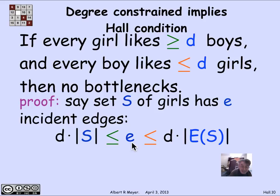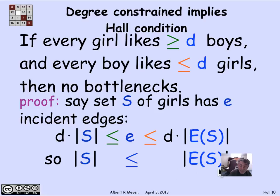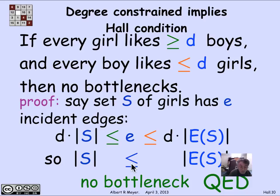So D × |S| ≤ E ≤ D × |E(S)|. Cancel the D's, and we get |S| ≤ |E(S)|. That's Hall's condition — the violation of that would be a bottleneck. This says there are no bottlenecks. We've proved the degree-constrained condition is sufficient to verify Hall's condition, and by Hall's theorem, sufficient to guarantee a match.